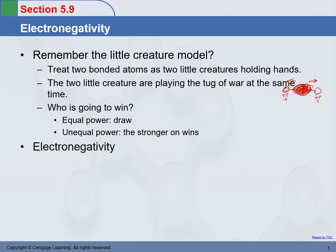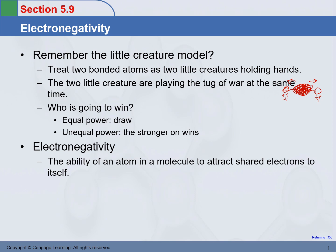Electronegativity. Electronegativity is the ability of an atom in a molecule to attract shared electrons to itself. Electronegativity is the concept we are going to use to evaluate which atom is stronger in terms of attracting electrons towards itself.